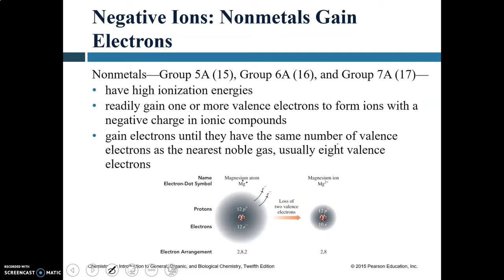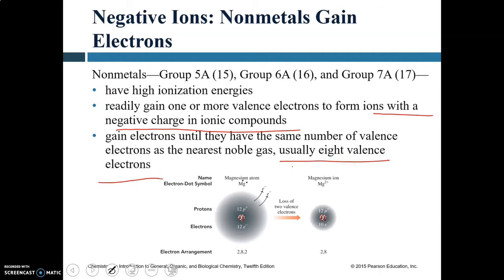Non-metals in groups 5A, 6A, and 7A have high ionization energy, so it's almost impossible to strip their outer electrons. But they readily accept electrons. When they gain one or more valence electrons, they form ions with a negative charge. They gain electrons until they have the same number of valence electrons as the nearest noble gas — eight valence electrons on the outer shell.